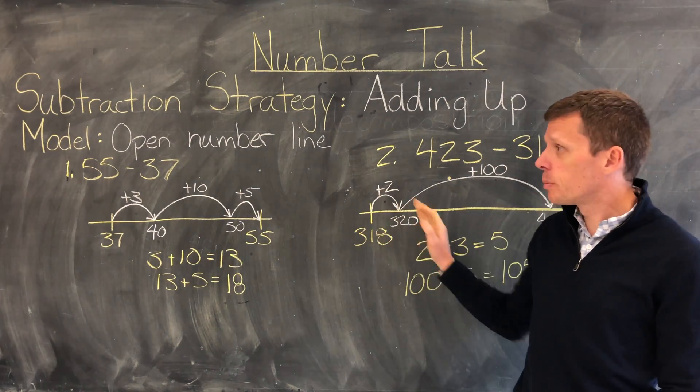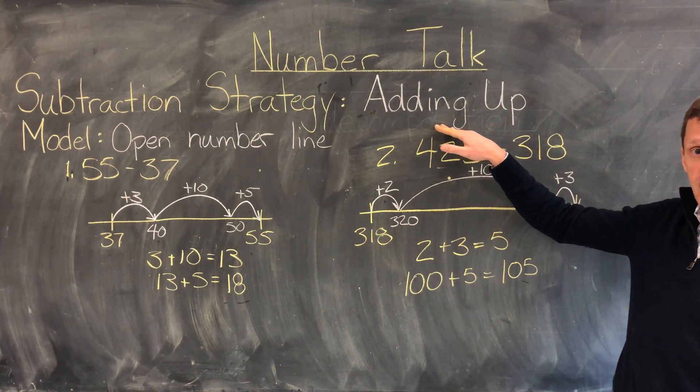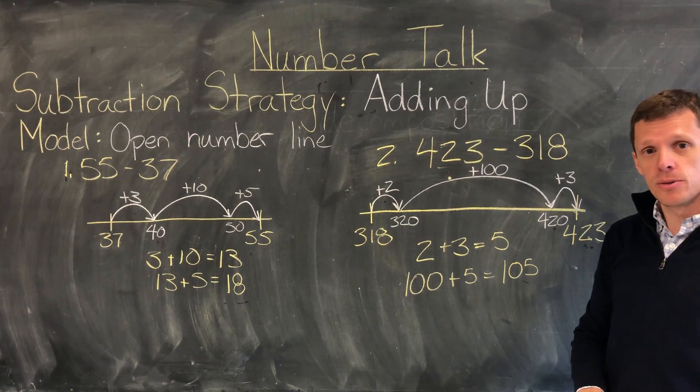So here are two examples of how we can use an open number line and the strategy of adding up to subtract 2 numbers.